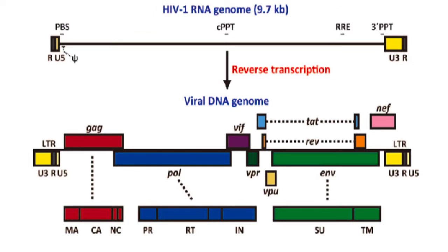The genome is divided into GAG, pol, and ENV regions, but due to differential splicing during expression, HIV can synthesize many different proteins.